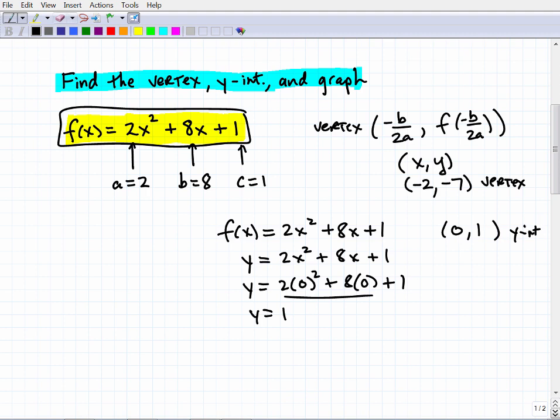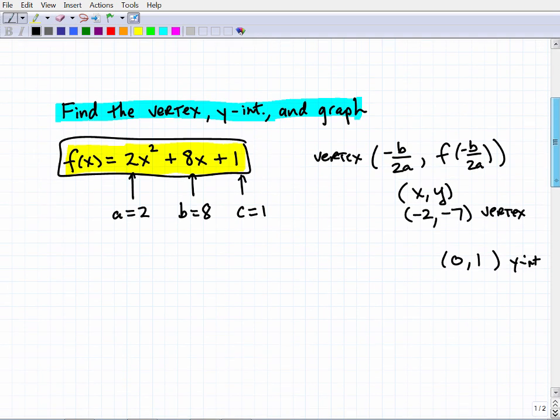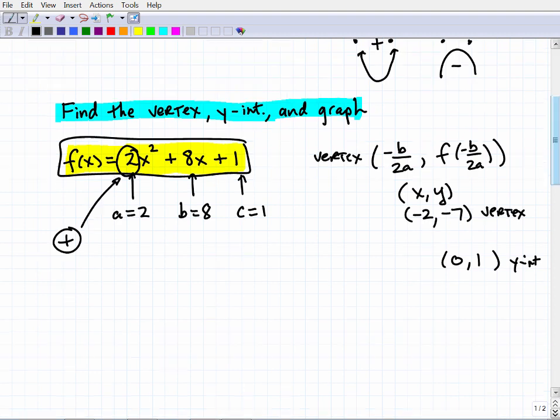And now we can pull this all together. I'm going to erase this. We've got our y-intercept; we've got a vertex. And now you should be familiar with one other thing too: this value, because this a value in front of the x² is positive, that means that this graph is going to be a parabola. And because the leading coefficient is positive, it's going to be a happy parabola. If it's negative, it's going to be a sad parabola.